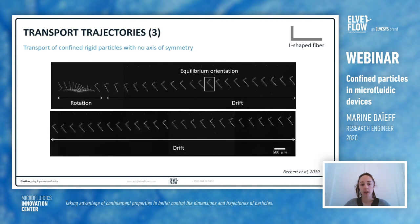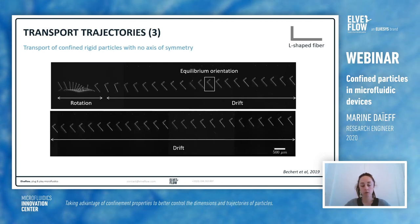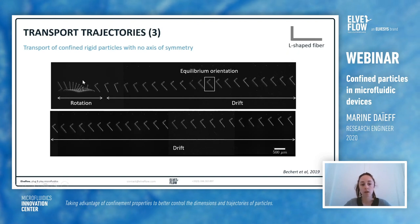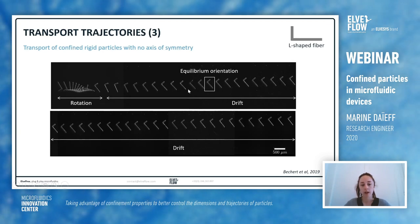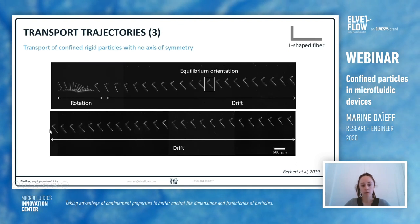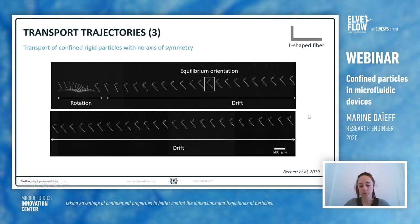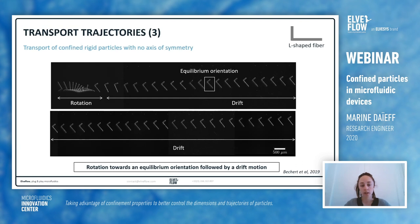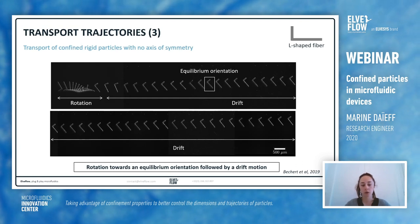If we complexify even more and look at rigid particles with no axis of symmetry — for example an L-shaped fiber — we have first a reorientation process, a rotation of the particle. After the particle achieves an equilibrium orientation, you have a drift toward the side wall of the channel. So for particles with no axis of symmetry, the particle rotates toward an equilibrium orientation followed by a drift motion.